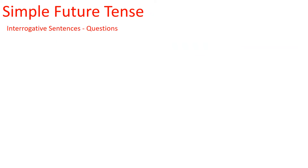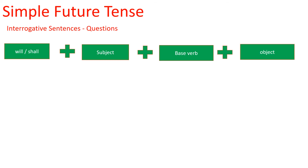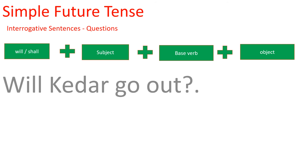In simple future tense, some interrogative sentences are here. Interrogative sentences means questions. In questions, there are some changes in the structure — we have to change the place of subject and helping verb, that is will or shall, then base verb and object. See the structure: will or shall plus subject plus base verb plus object.